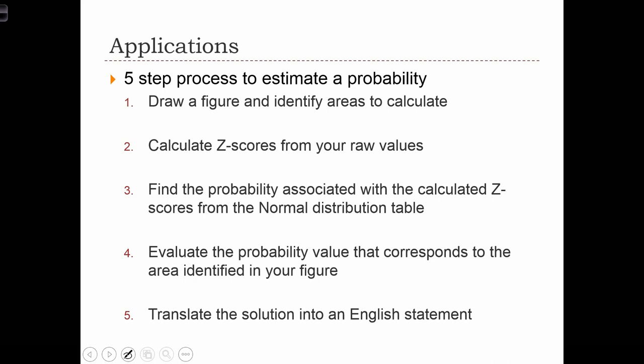Then we are going to transform our raw values into z-scores and find the probability associated with the calculated z-scores from the normal distribution table.